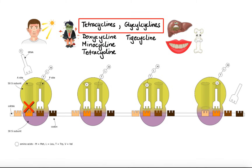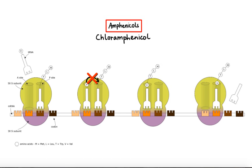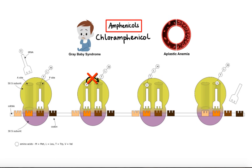Now let's move on to amphenicols. Amphenicols work primarily by binding to the 50S ribosomal subunit, where they block the peptidyl transferase center that catalyzes peptide bond formation. This prevents transfer of the elongating peptide chain to the newly attached aminoacyl-tRNA, which generally results in a bacteriostatic effect. The example of an amphenicol antibiotic is chloramphenicol. Intravenous chloramphenicol use has been associated with gray baby syndrome, resulting from an infant's immature liver being unable to metabolize chloramphenicol, causing hypotension, abdominal distension, and cyanosis, which can ultimately lead to death. Another rare and sometimes fatal adverse effect is aplastic anemia, which can occur weeks or even months after treatment.